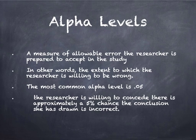Sometimes in more exploratory studies, the alpha level is 0.1, which would be a 10% chance. In more conservative and lab-based studies, it might be 0.01, which would be a 1% chance. Or in medical research, we sometimes see 0.001, which would be a one-tenth of a percent chance of being wrong.